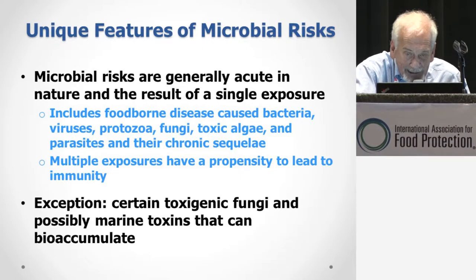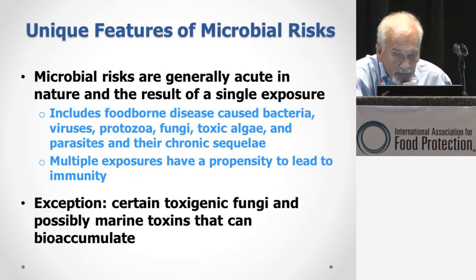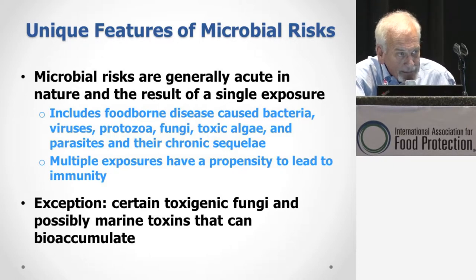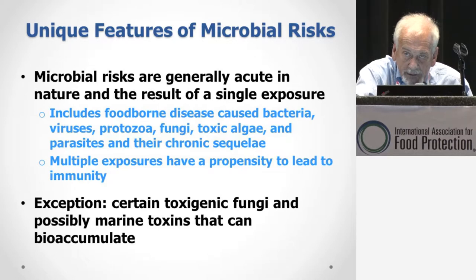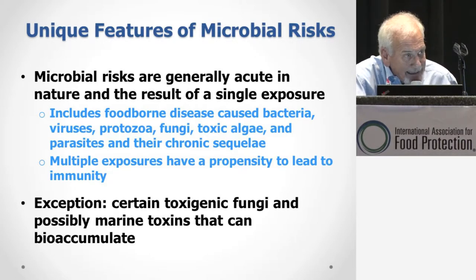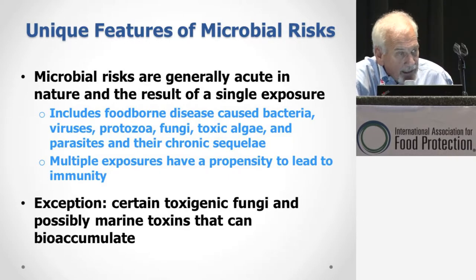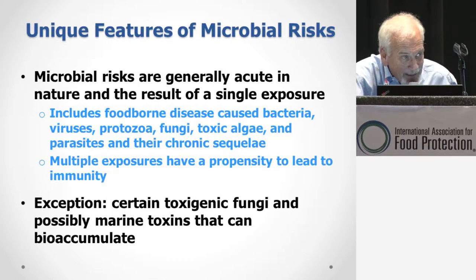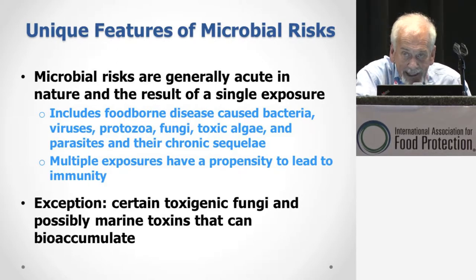Microbial risks are generally acute in nature — they are a result of the body's response to a single exposure. This includes most of the diseases caused by bacteria, viruses, protozoa, toxic algae, and parasites, including their chronic sequelae. As you increase the number of exposures in any one host, you have the likelihood of developing immunity. So we typically use a naive human — someone who has not been exposed to the agent and has no predetermined immunity — when looking at risk.